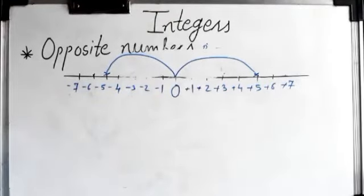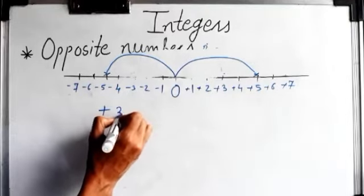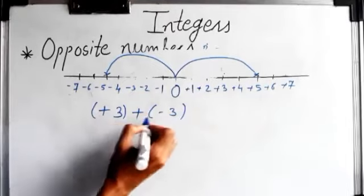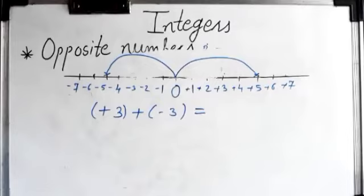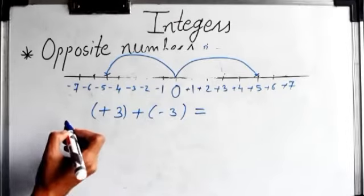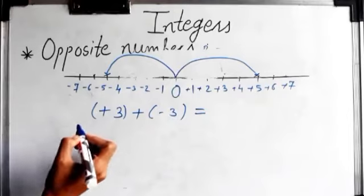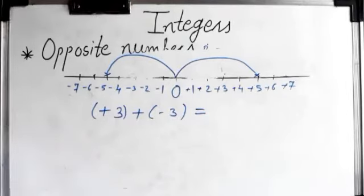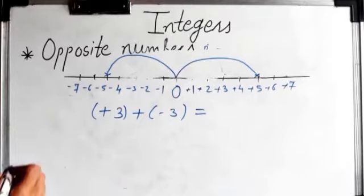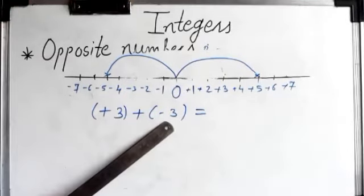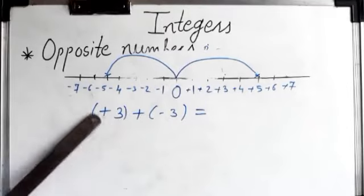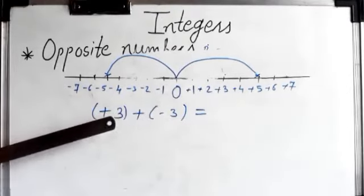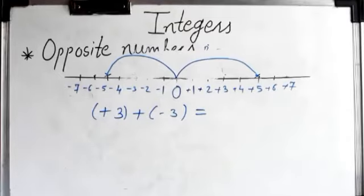Now let's see what happens when we add opposite numbers. For example, plus three and minus three. We have learned the addition rules for integers. If both integers have the same sign, add the numbers and give the common sign. If both integers have different signs, subtract the numbers and give the sign of the bigger number.